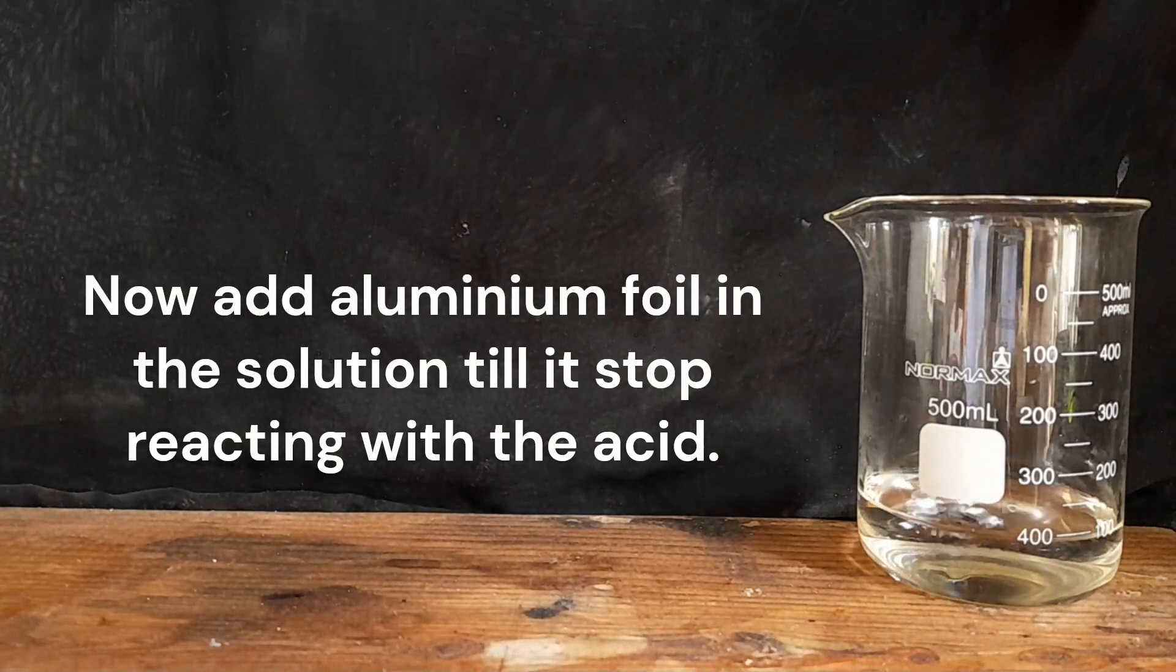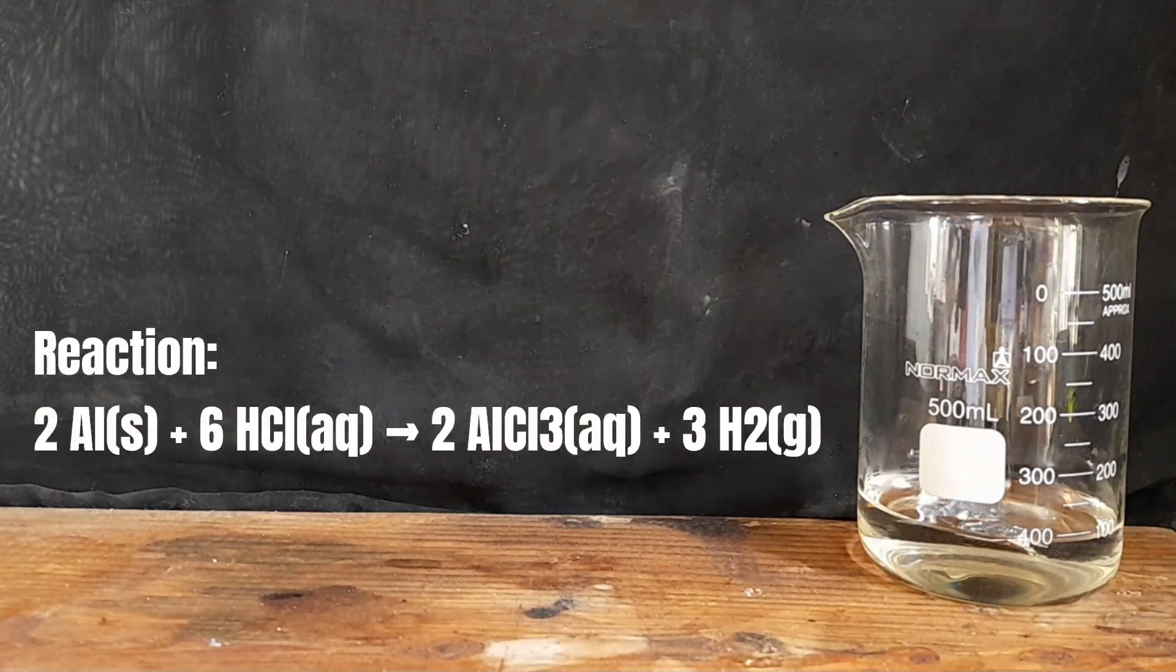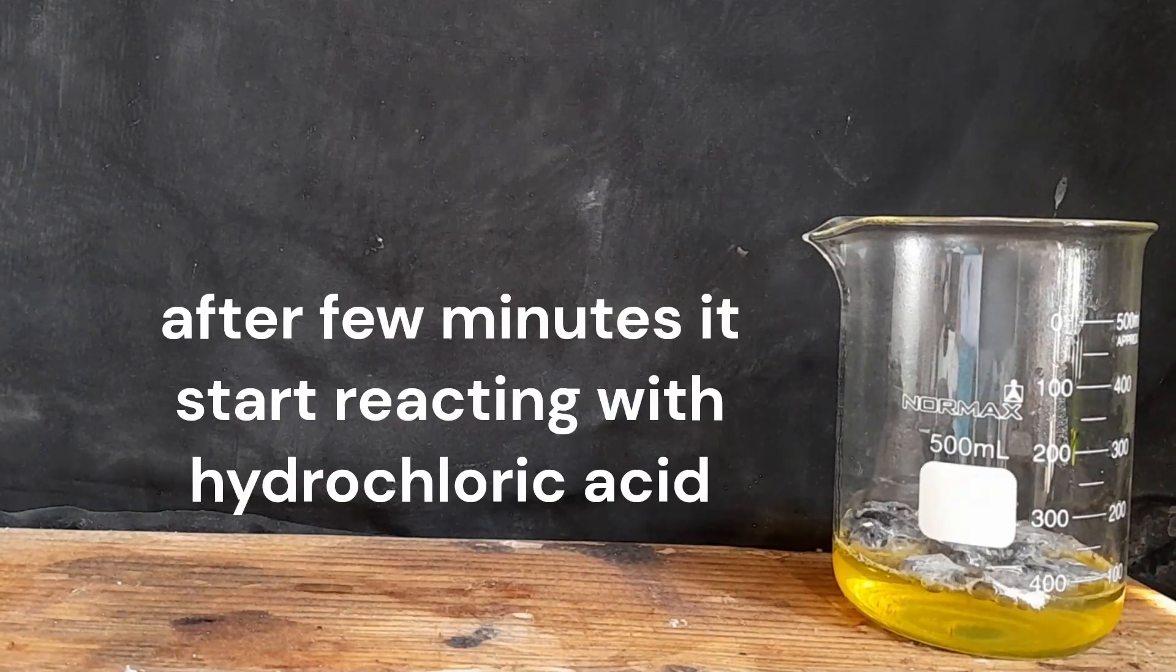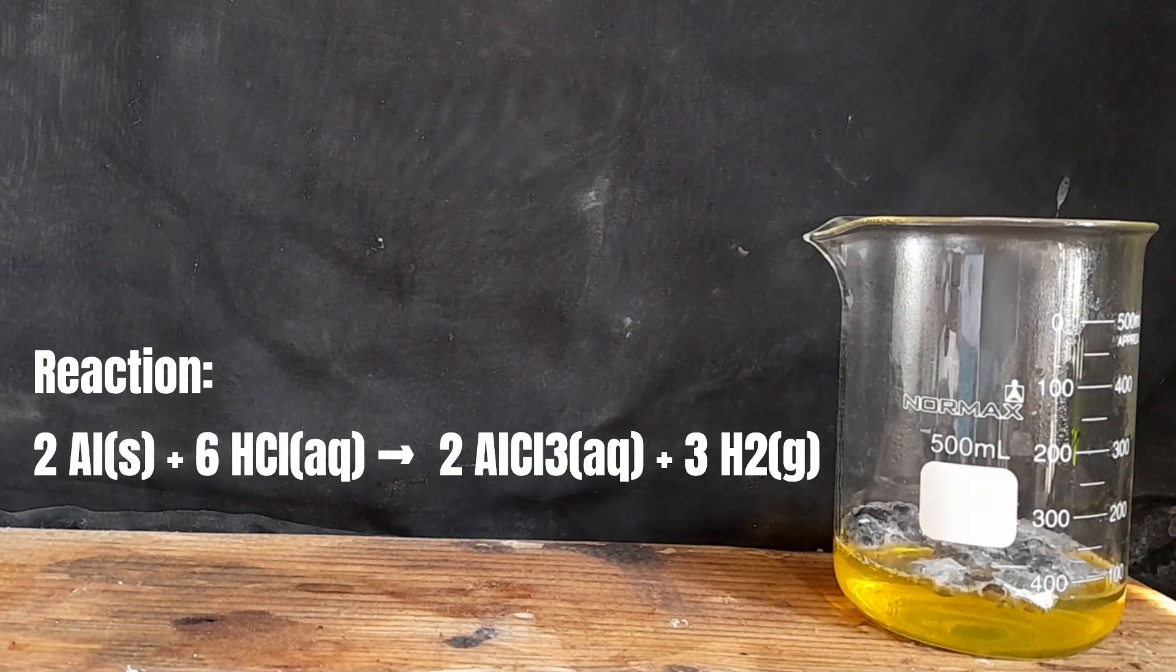Now add aluminum foil in the solution till it stop reacting with the acid. After few minutes it start reacting with hydrochloric acid.